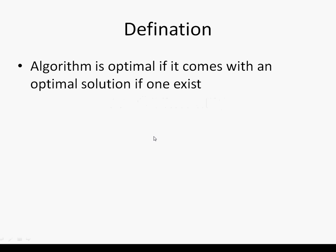First, the definition of optimality. What is optimality? Optimality just means an algorithm is optimal if it ends with an optimal solution, if one exists. That's the definition of optimal.